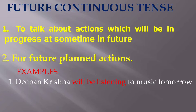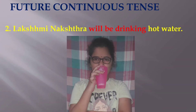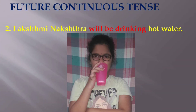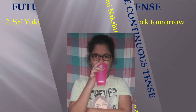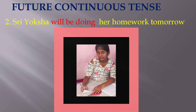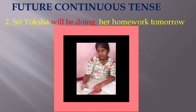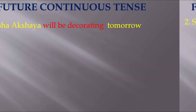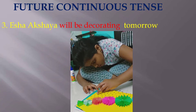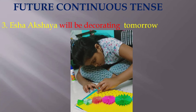Let us see examples. Deepan Krishna will be listening to music tomorrow. Lakshmi Nakshatra will be drinking hot water. Sri Aksha will be doing her homework tomorrow. Isha Akshaya will be decorating tomorrow.